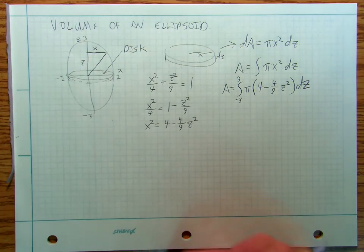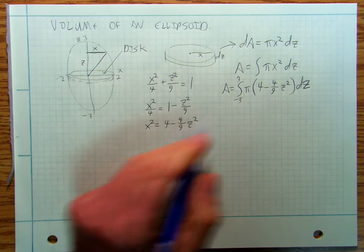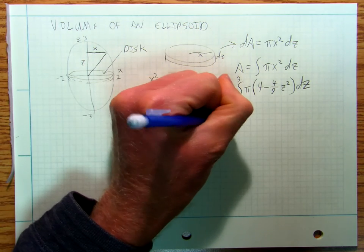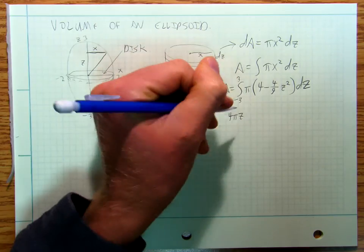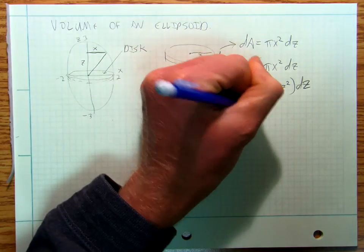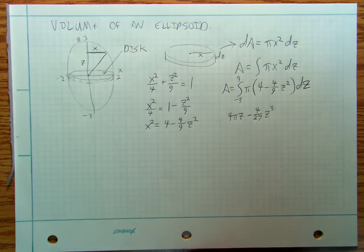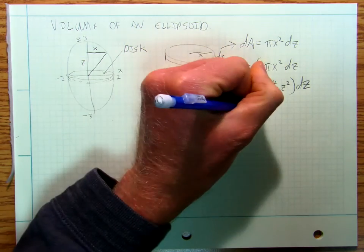Okay, so now, going through, I'm going to end up with 4 pi z minus 4 over 27 z cubed. There's a pi on that as well.